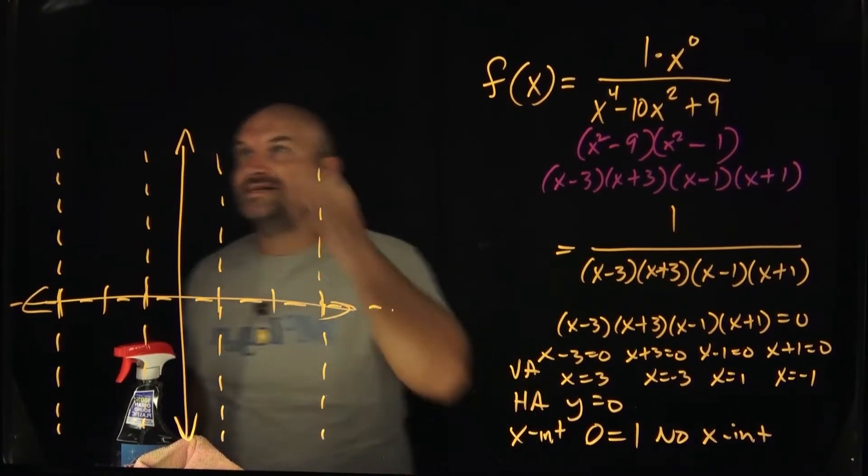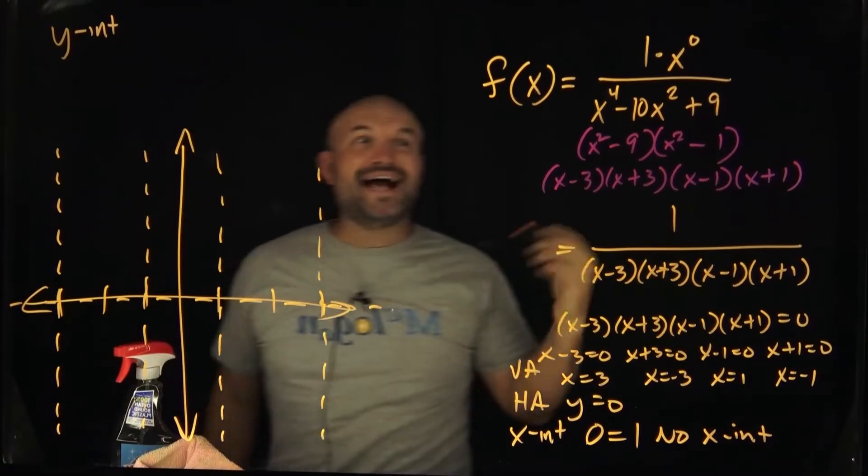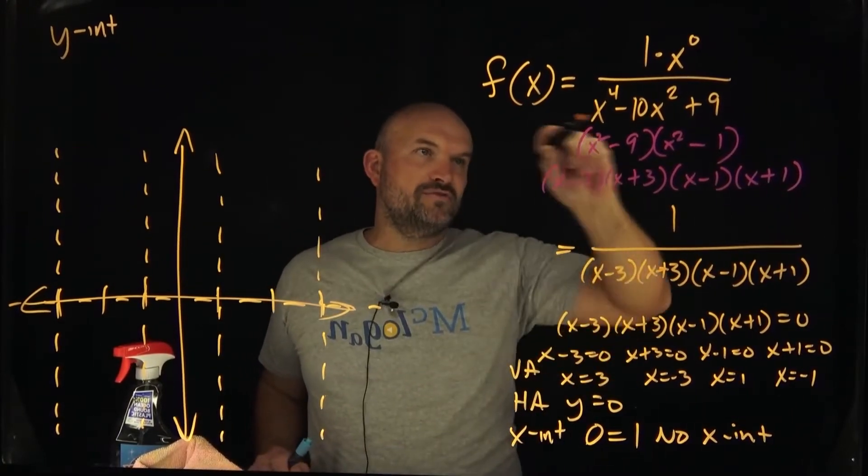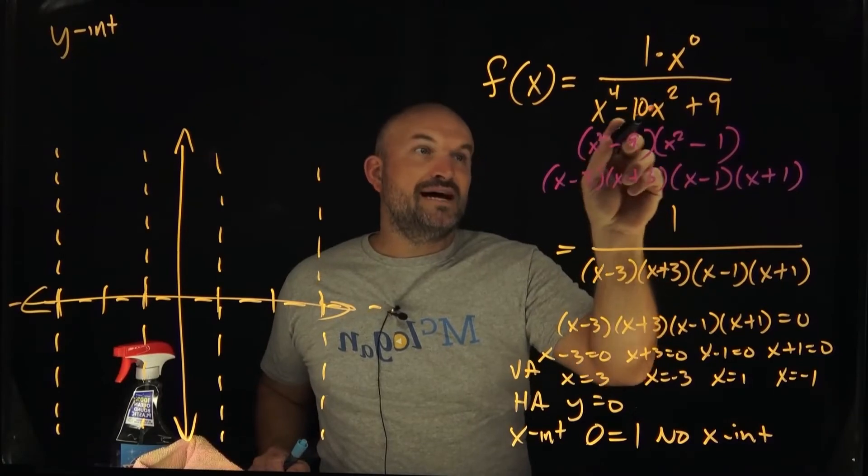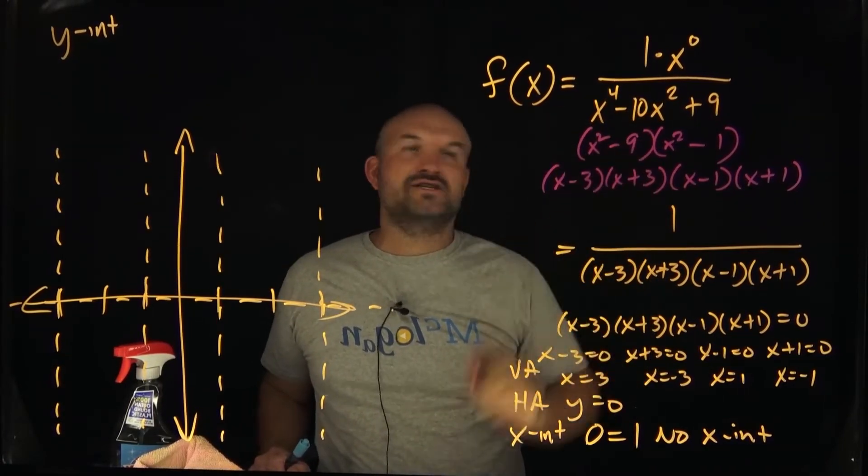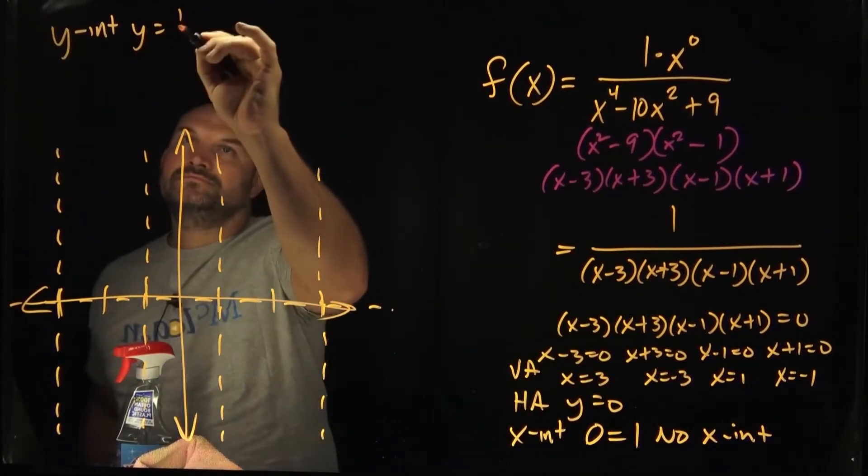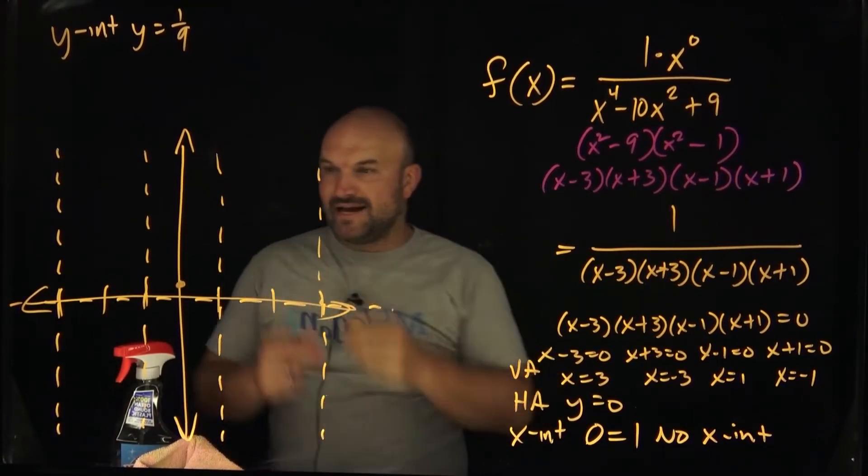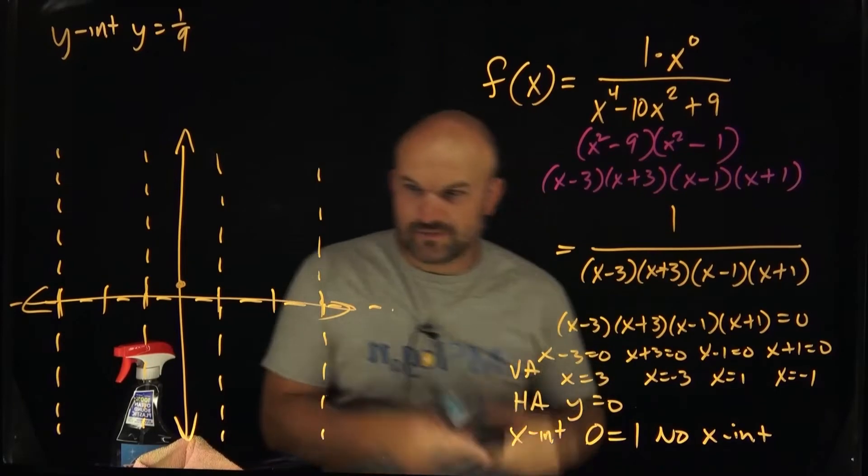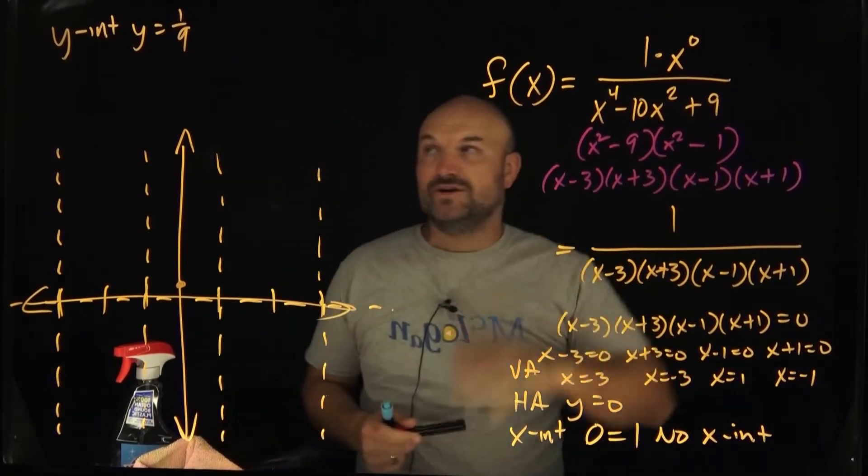Now, what about the y intercept? I'm kind of running out of space here. The y intercept is when x is equal to zero. Well, if you plug zero in for all of these values, let's go and see. I don't really want to plug it in here. Let's do it up here. Zero squared minus 10 times zero plus 9. So therefore, that's just going to be one ninth. So that's going to be this point right here. Okay, so now we have the y intercept. There is no x intercept. We have the horizontal asymptote, and we have four vertical asymptotes.